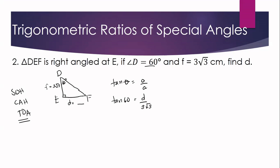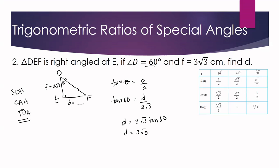By cross multiplication: d equals 3 square root of 3 times tangent 60. Since this is a special angle, tangent 60 equals square root of 3. So d equals 3 square root of 3 times square root of 3, and the product of square root of 3 times square root of 3 is 3. Therefore d equals 9 centimeters.